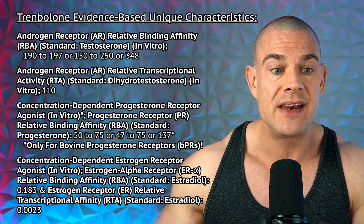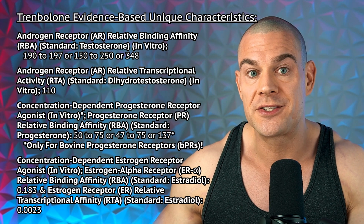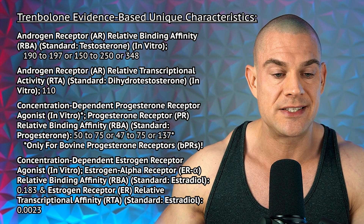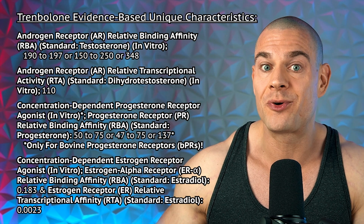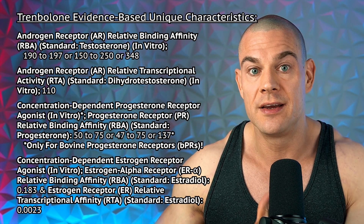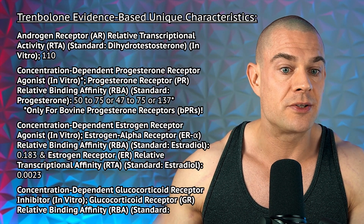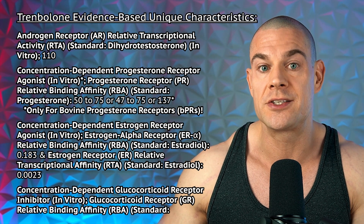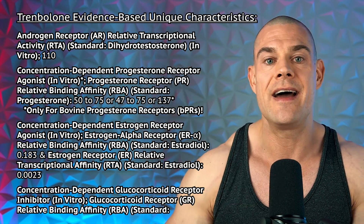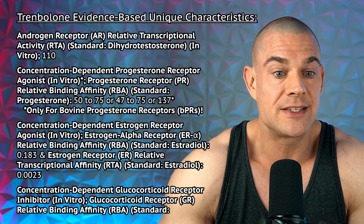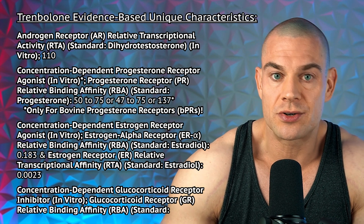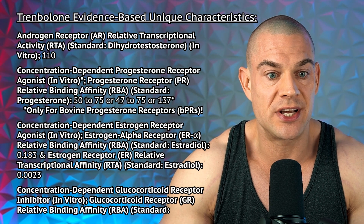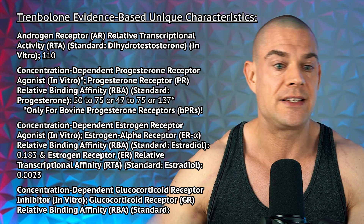The androgen receptor relative binding affinity of Trenbolone compared to testosterone is 190 to 197, or 348, depending on which study you interpret. Trenbolone's androgen receptor relative transcriptional activity compared to dihydrotestosterone is slightly higher at 110. Compared to DHT, that's approximately 10% more transcriptional activity.